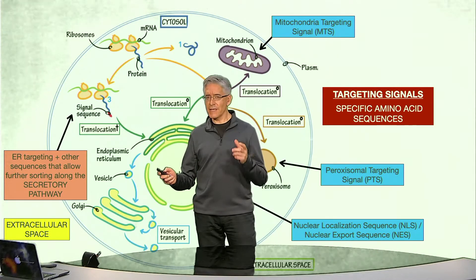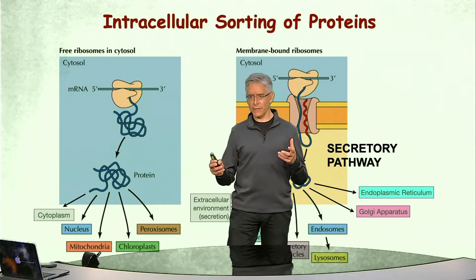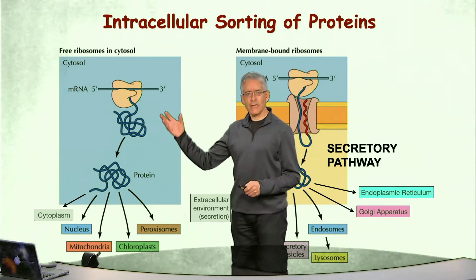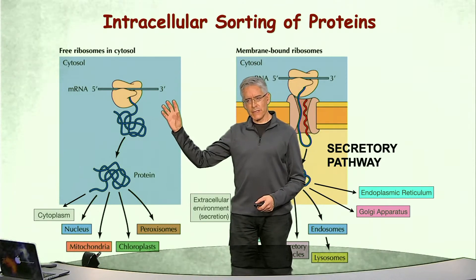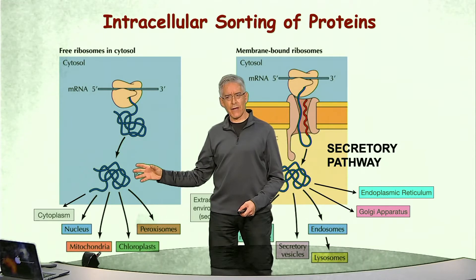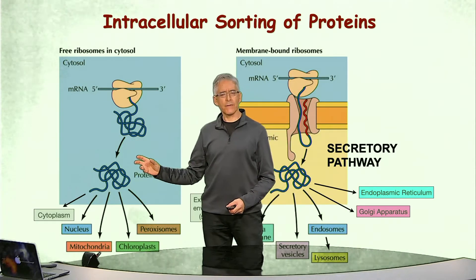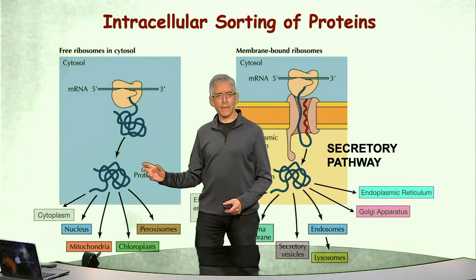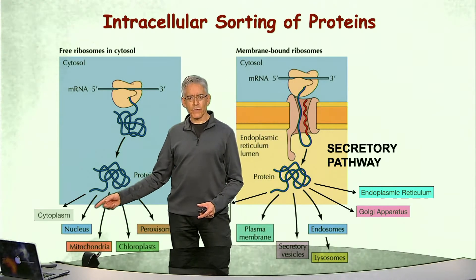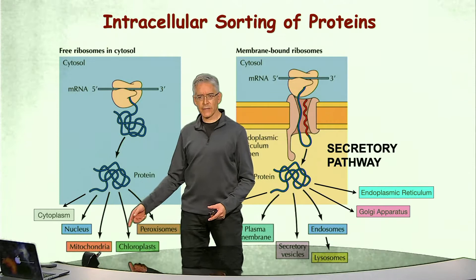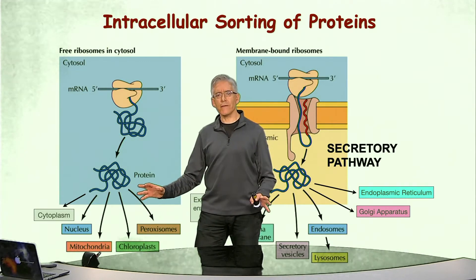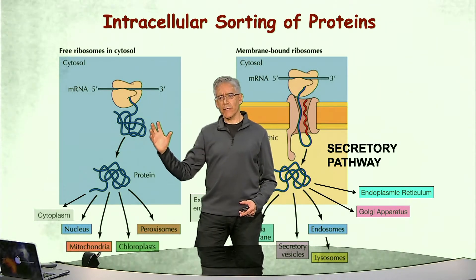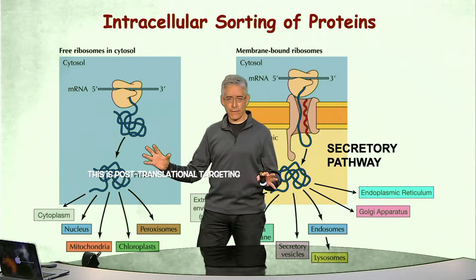This defines the two main paths that proteins may follow within the cell. The first path is followed by proteins synthesized in free-floating ribosomes, meaning the protein is fully synthesized and released from ribosomes before being targeted to its final destination. This is the path followed by proteins meant to remain in the cytoplasm or to go to the nucleus, mitochondria, chloroplasts, or peroxisomes.